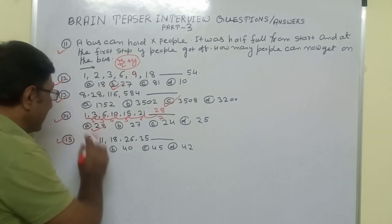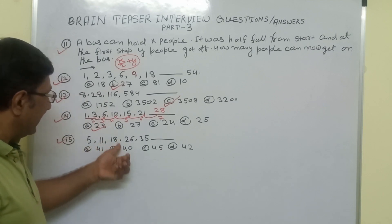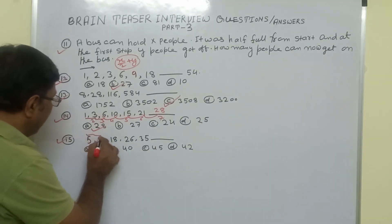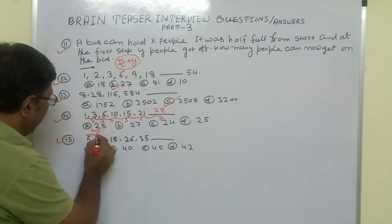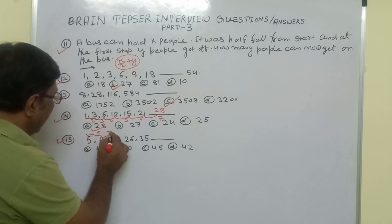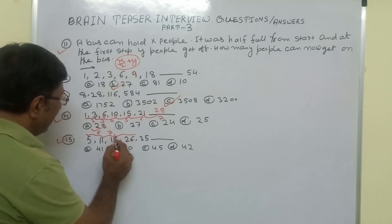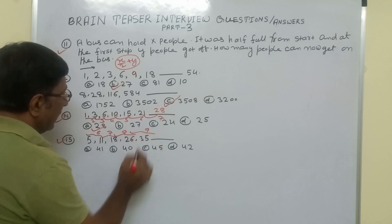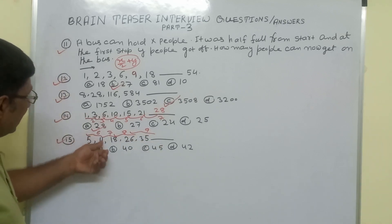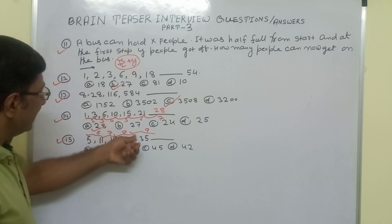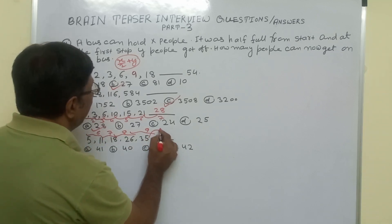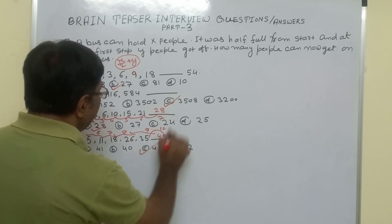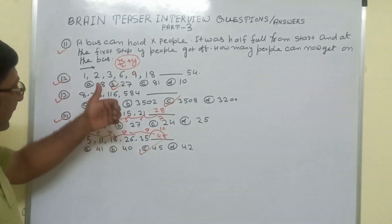The next question is the series: 5, 11, 18, 26, 35 — find the next number. The differences are: 11−5=6, 18−11=7, 26−18=8, 35−26=9. So the differences are increasing by 1: 6, 7, 8, 9. The next difference will be 10, so 35 + 10 = 45. The correct answer is 45.